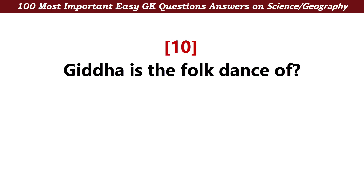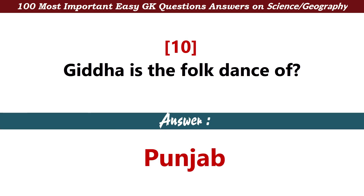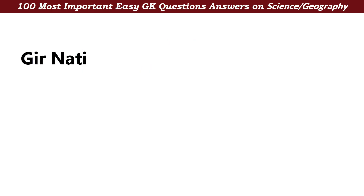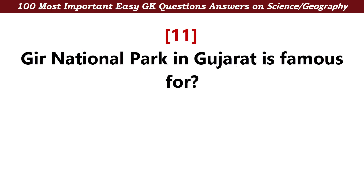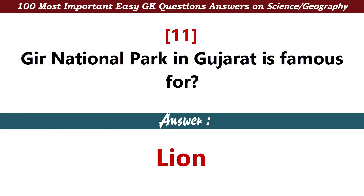Giddha is the folk dance of — Answer: Punjab. Gir National Park in Gujarat is famous for — Answer: Lion.